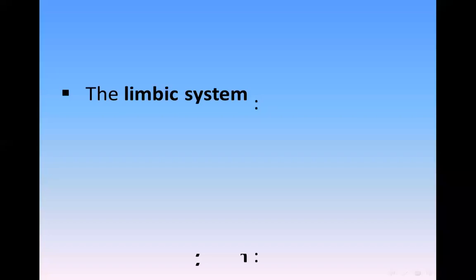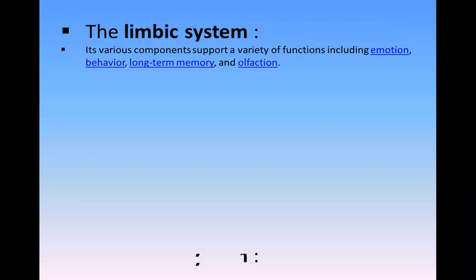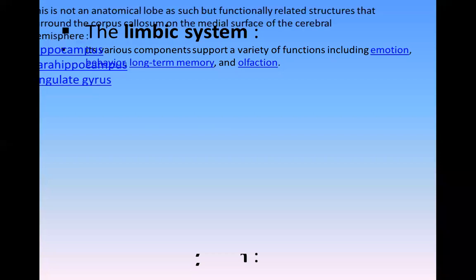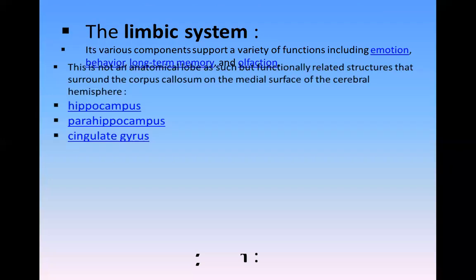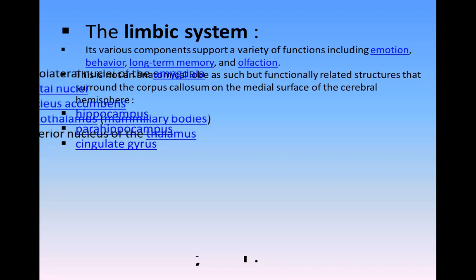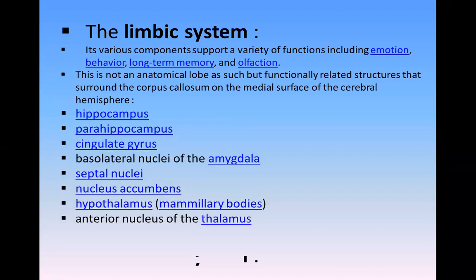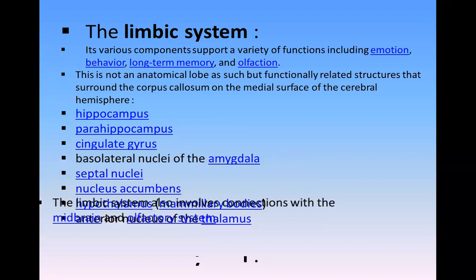The limbic system: its various components support a variety of functions including emotion, behavior, long-term memory, and olfaction. This is not an anatomical unit as such, but functionally related structures that surround the corpus callosum on the medial surface of the cerebral hemisphere. It includes the hippocampus, parahippocampal gyrus, cingulate gyrus, basolateral nuclei of the amygdala, septal nuclei, nucleus accumbens, hypothalamus including the mammillary bodies, and anterior nucleus of the thalamus. The limbic system is also connected with the midbrain and olfactory system.